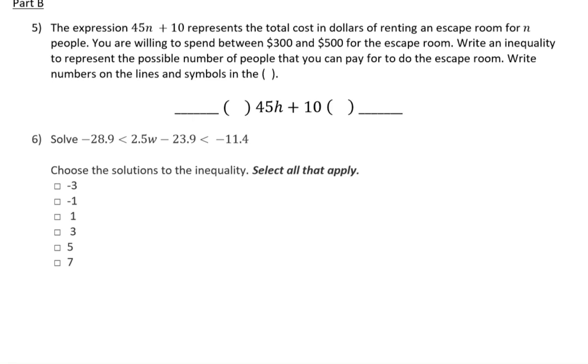Alright, here's part B of our unit 2 review. It says the expression 45N plus 10 represents the total cost in dollars of renting an escape room for N people. I think this was supposed to be an N. Looks like an H. I think it's supposed to be an N.